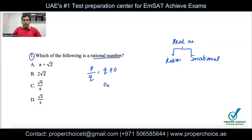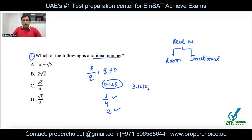For example, 0.125 is a terminating decimal, so 3/4 is a rational number. 2 is also a rational number. And 3.1212121212... going infinitely — which can be written as 3.12̄ — is also part of the rational numbers.